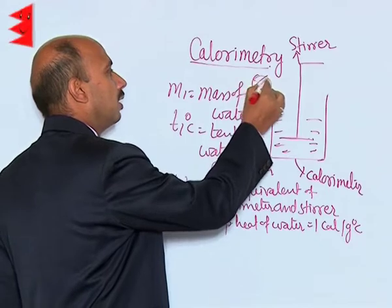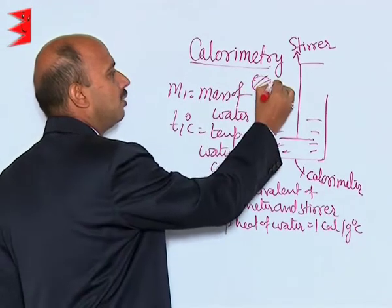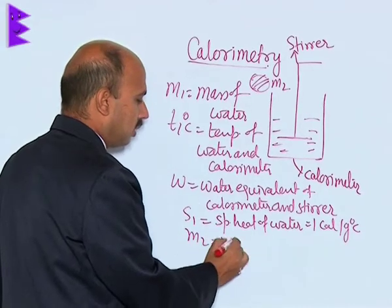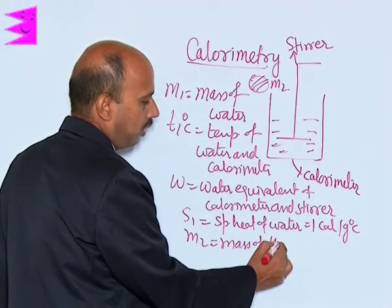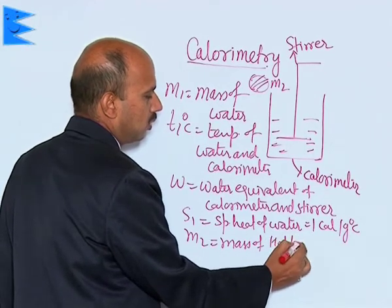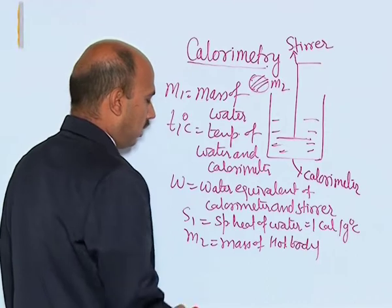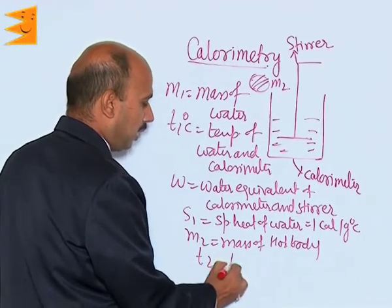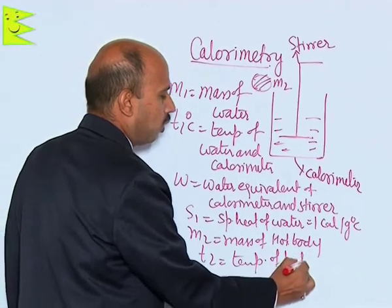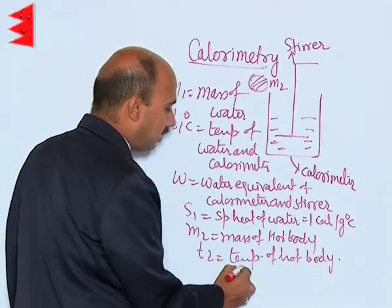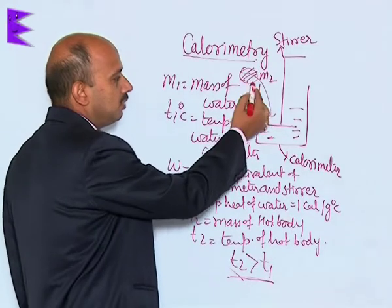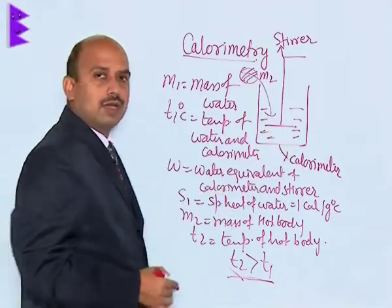There is another body here whose mass is M2 — M2 is the mass of the hot body — and T2 is the temperature of the hot body. In this case, T2 is greater than T1, meaning its temperature is larger than the water and calorimeter temperature.